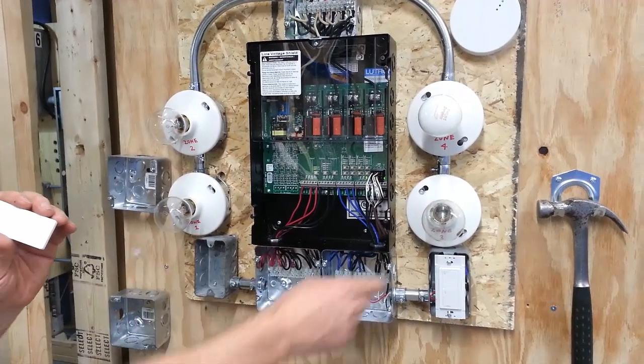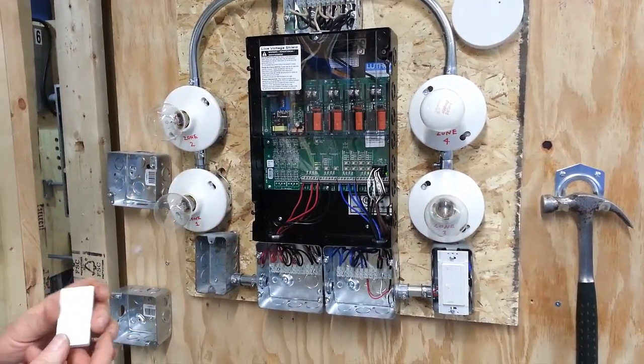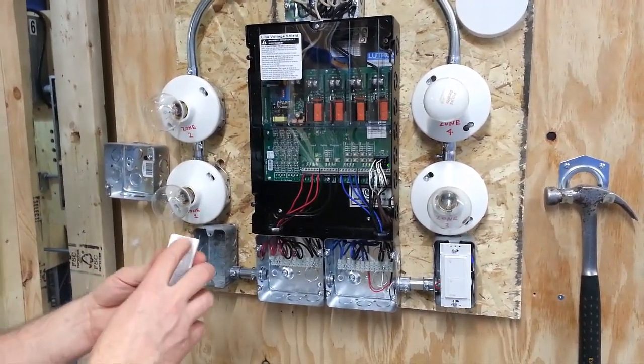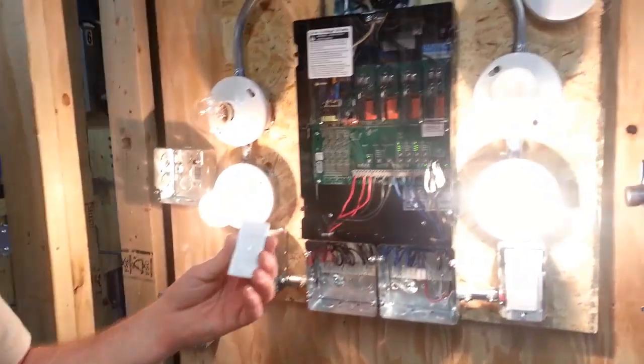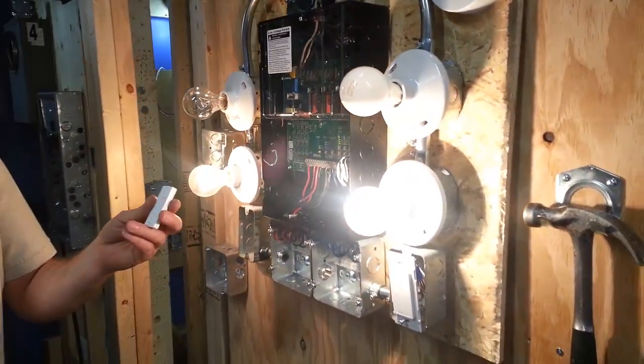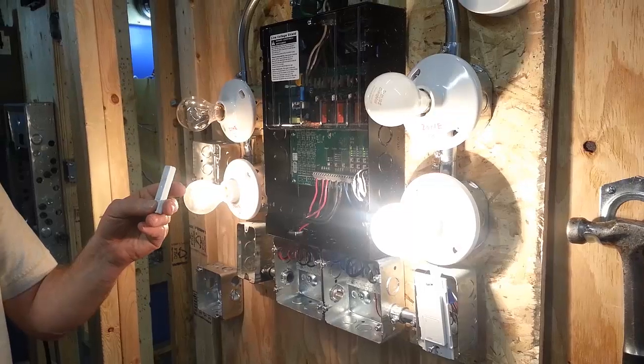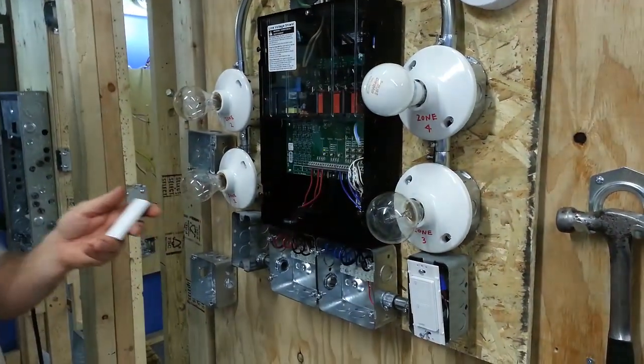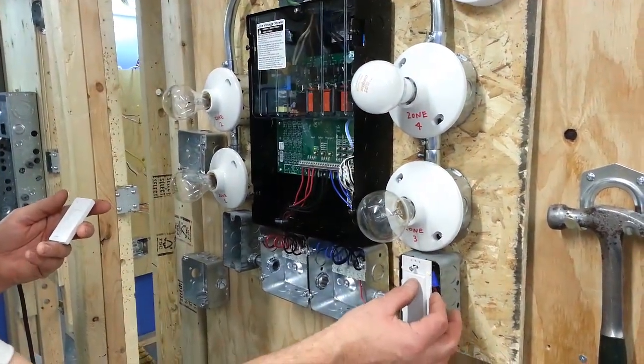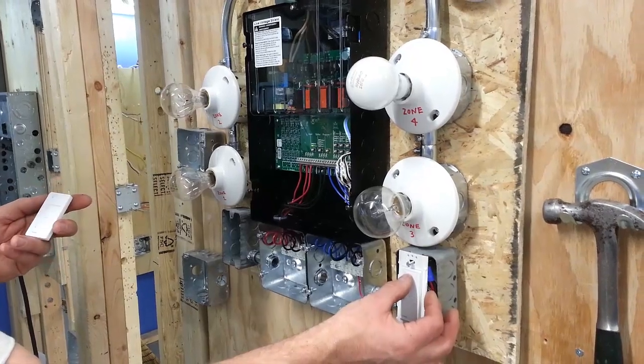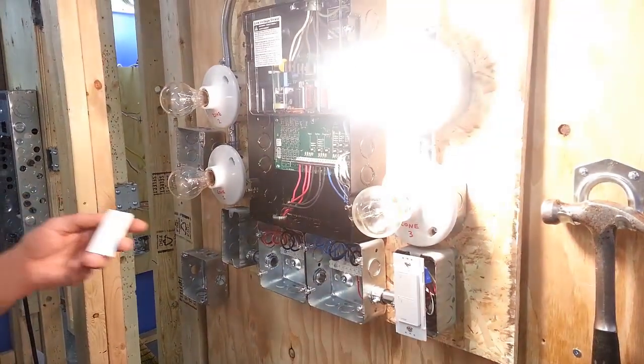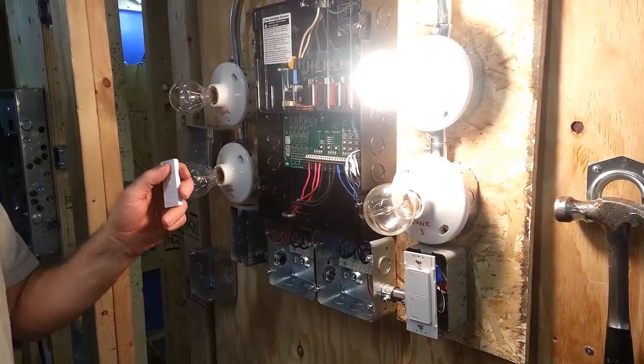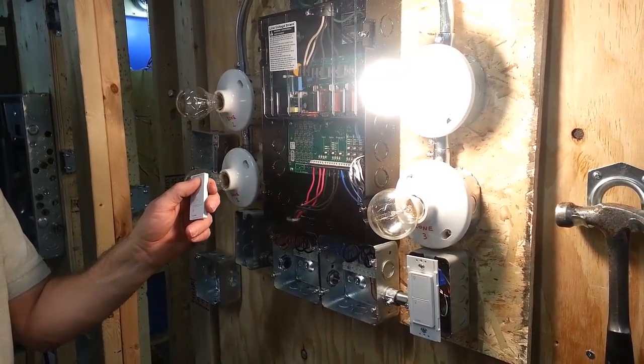And now this switch should turn on zone 1 and zone 3. This light is zone 1. This one is zone 3. So they should both come on at once when I push the on button. So now it's programmed for that. And that will turn it off. And now you've got your other wired switch that you did before that turns on zone 4. And this switch here should turn on 1 and 3.